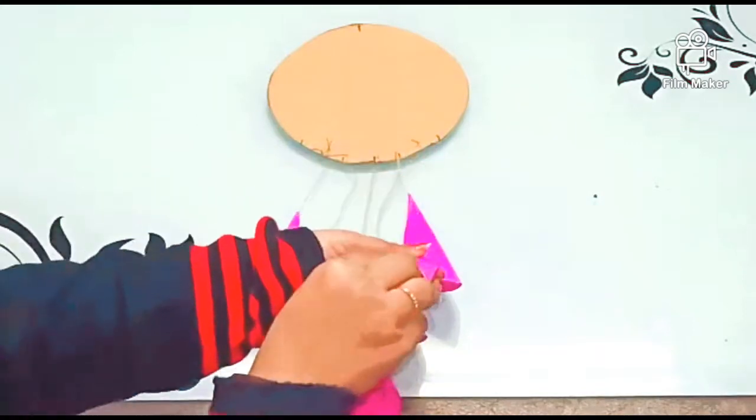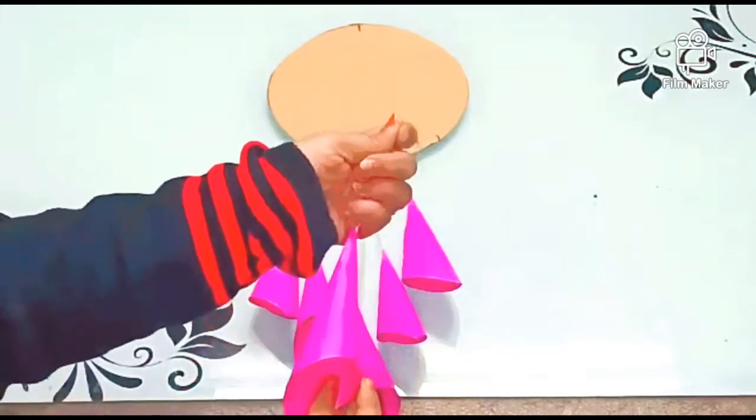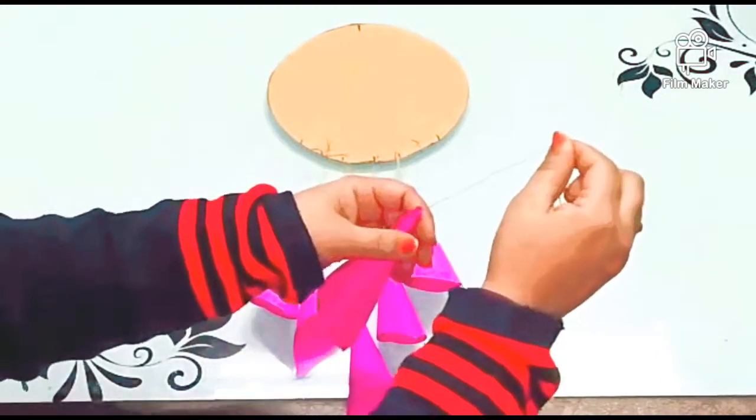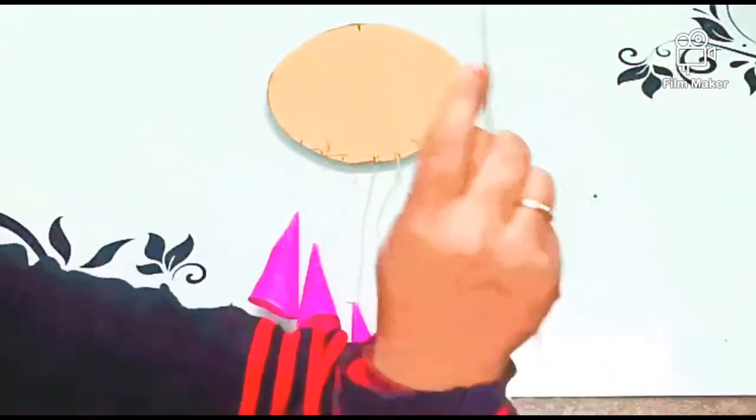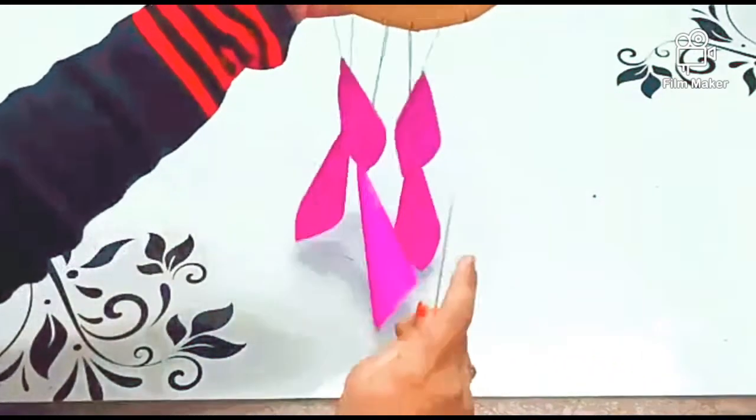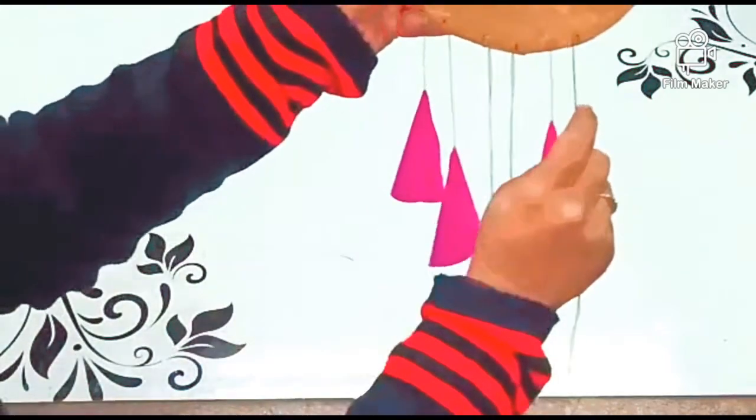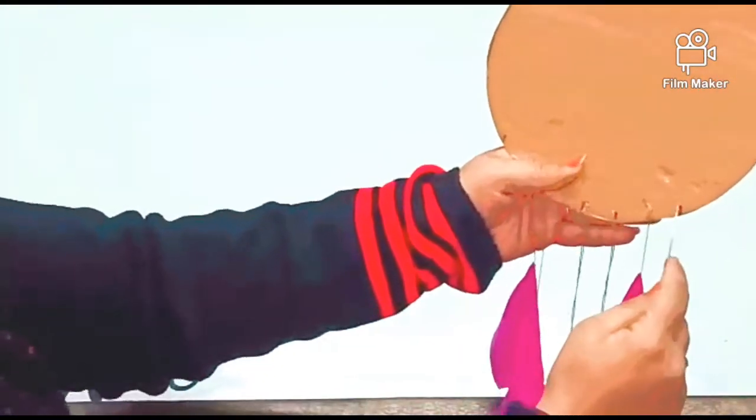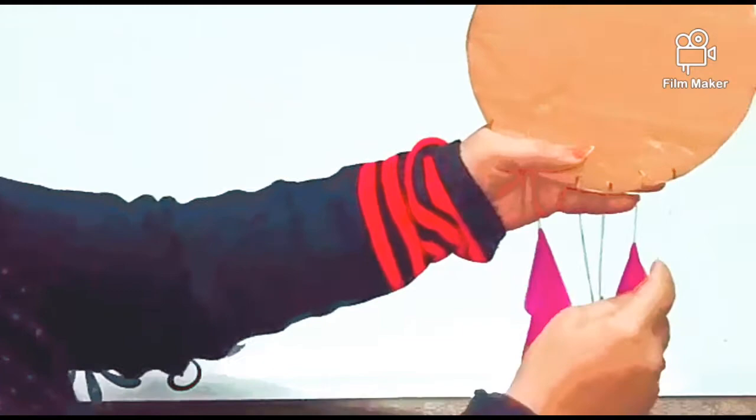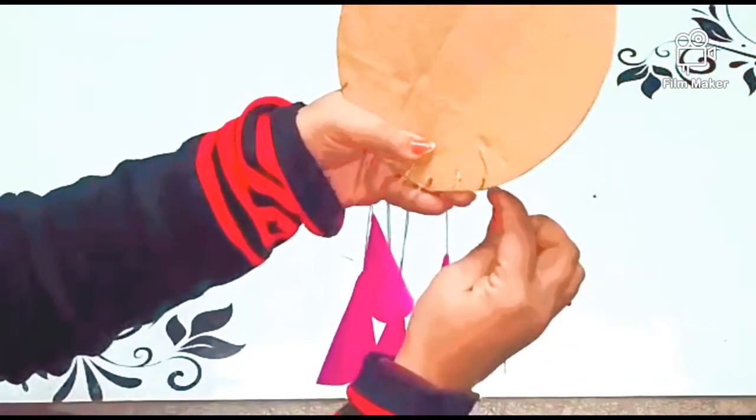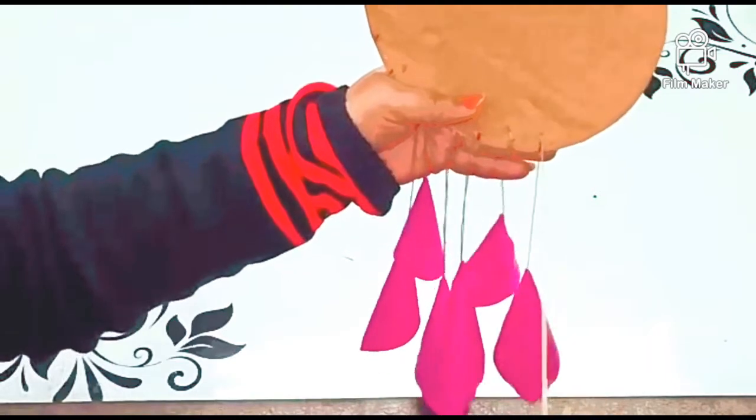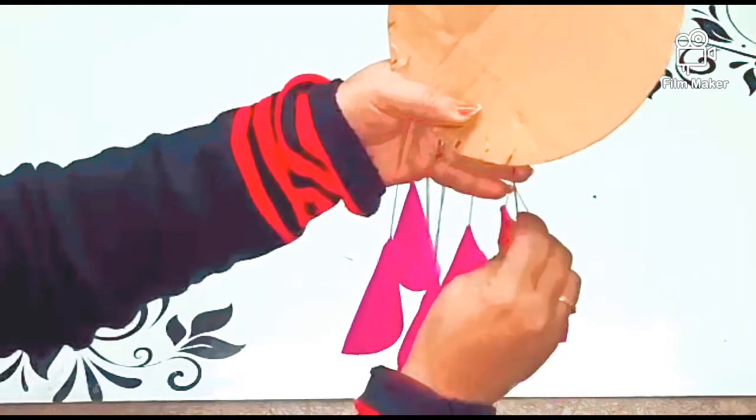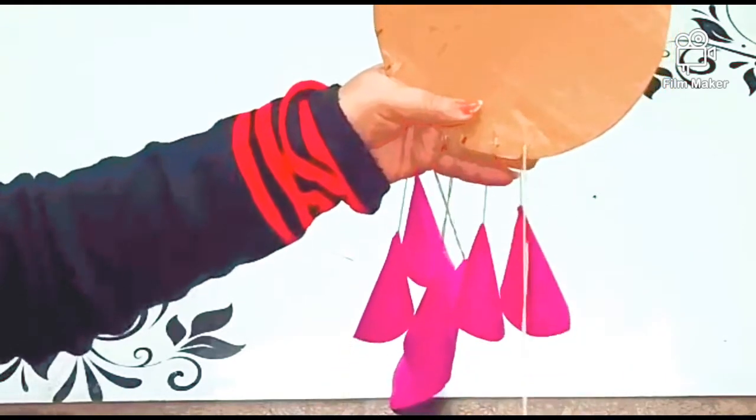Now we'll put the string through it. So as you see, we put it in half and like this to hide it, and we are making a knot.